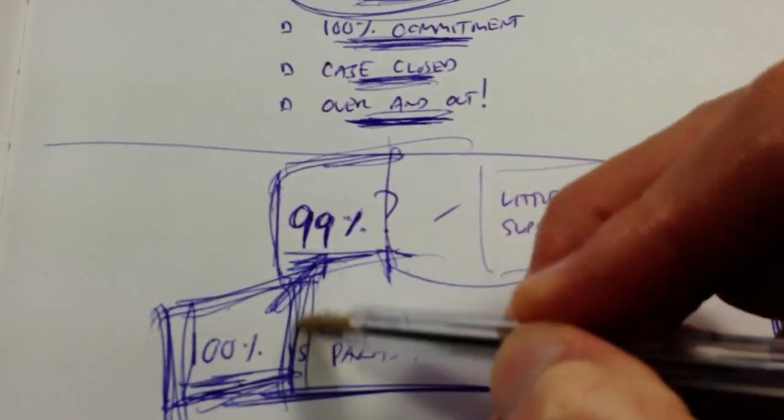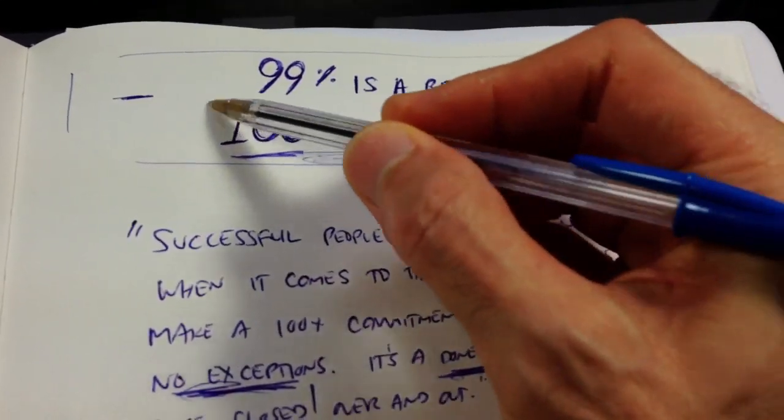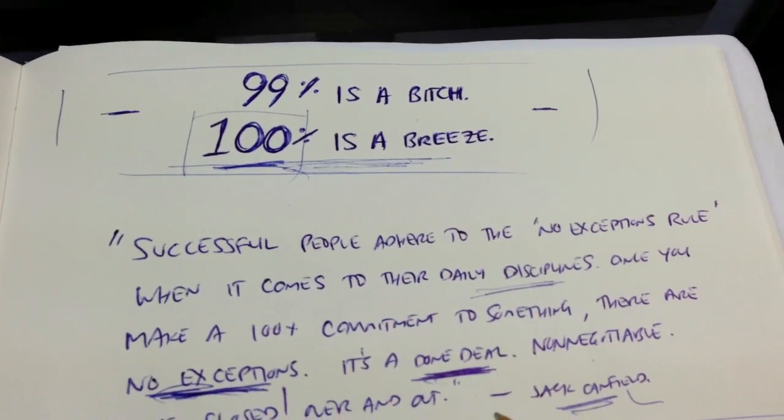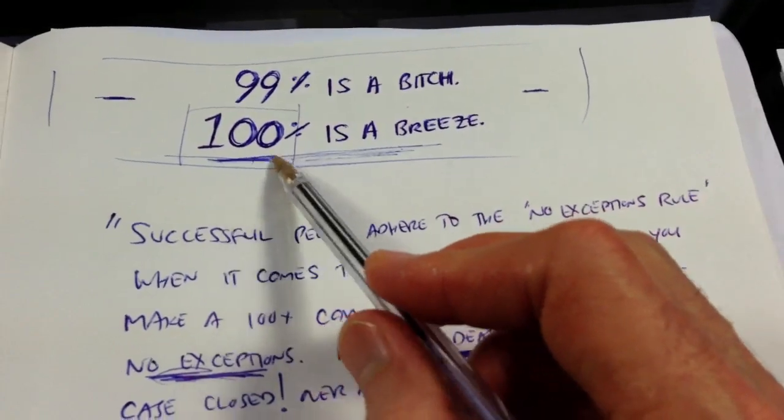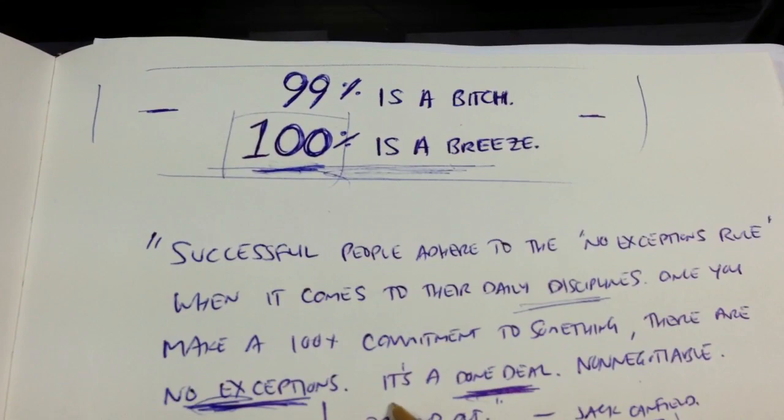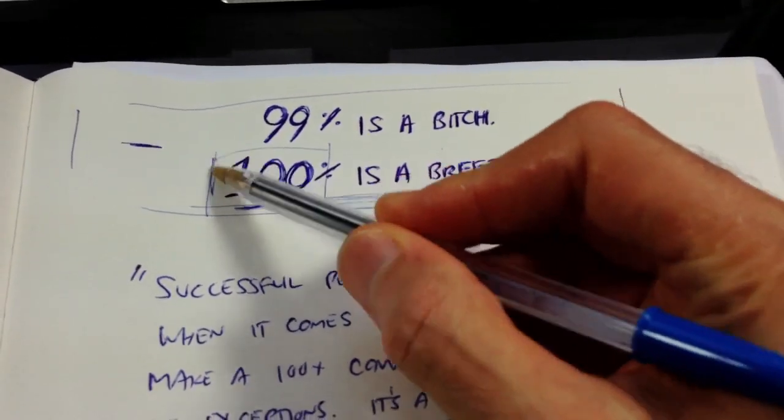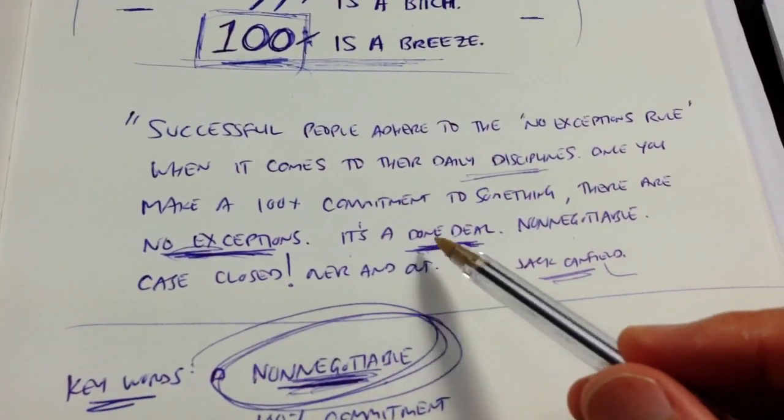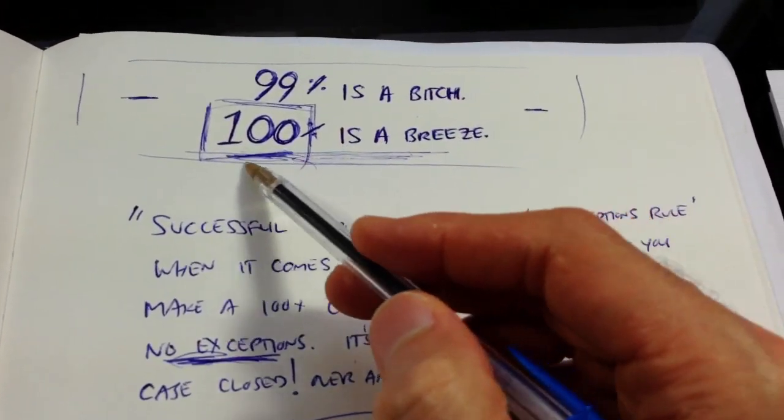Make a 100% commitment. So identify what in your life deserves the 100% commitment and you might be suffering from some goal hangover right now. We'll talk about that in a future video and you might have set too many goals. You can't set 100 goals at 100% commitment. You can't even set 10 goals at that or five goals at that or three goals at that really. Pick one thing in your life that's worthy of a 100% non-negotiable, no exceptions, done deal, case closed, over and out commitment and then make that commitment to it.